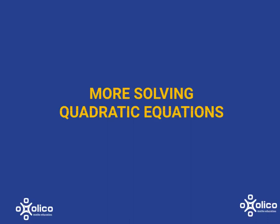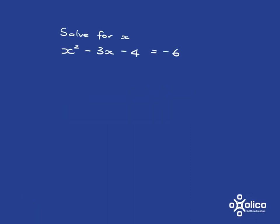Let's have a look at a few more quadratic equations. If you have a look at this one, x squared minus 3x minus 4 is equal to negative 6, I'm going to show you, firstly, a mistake that many people make.